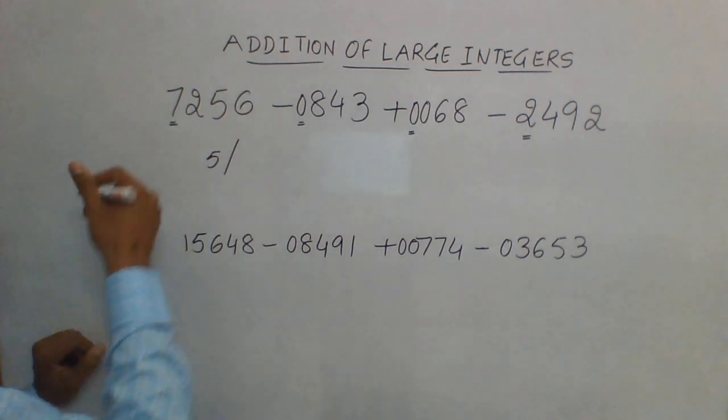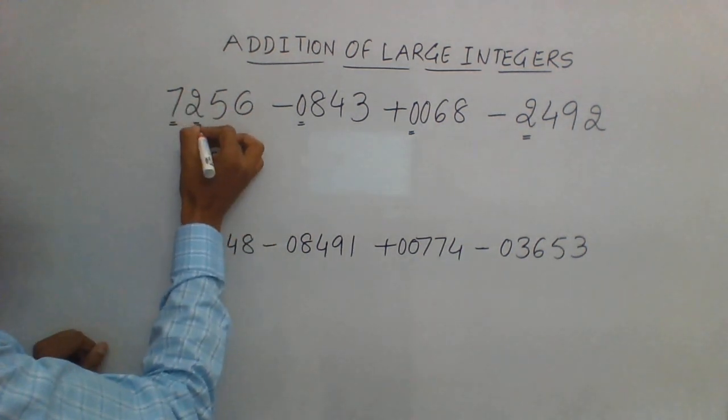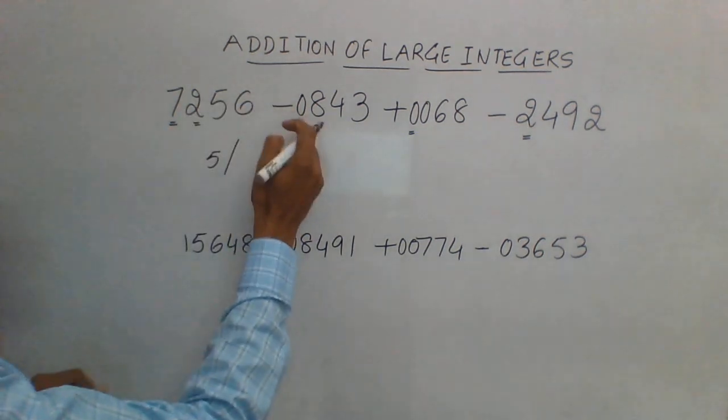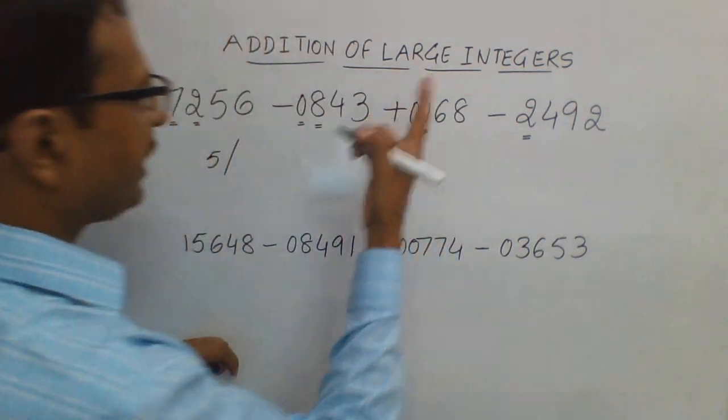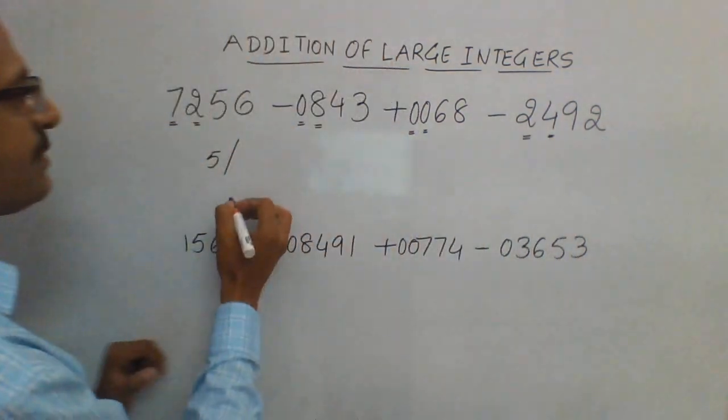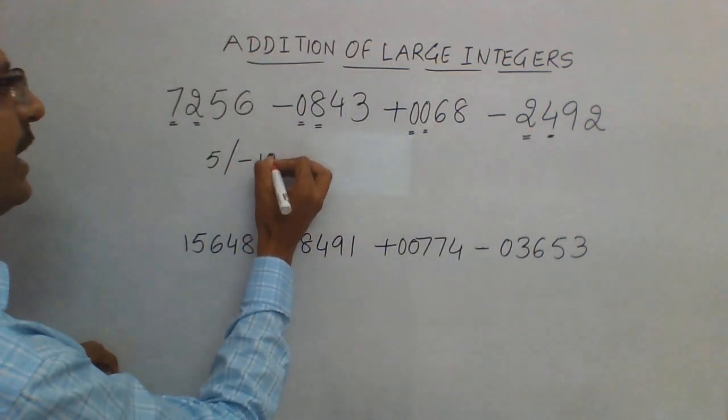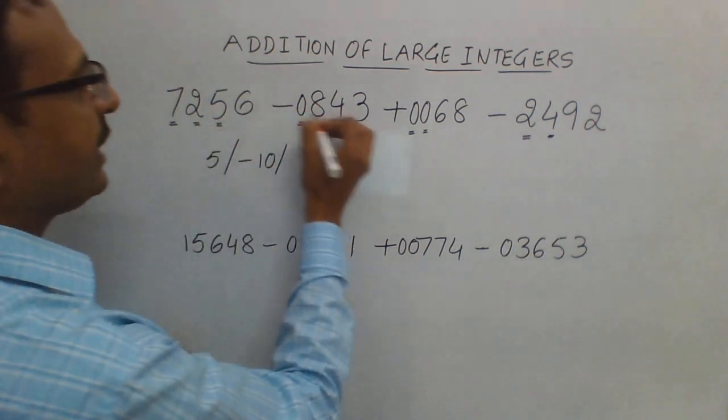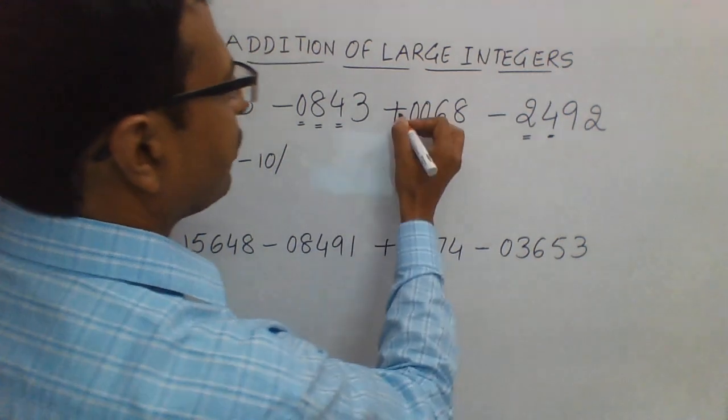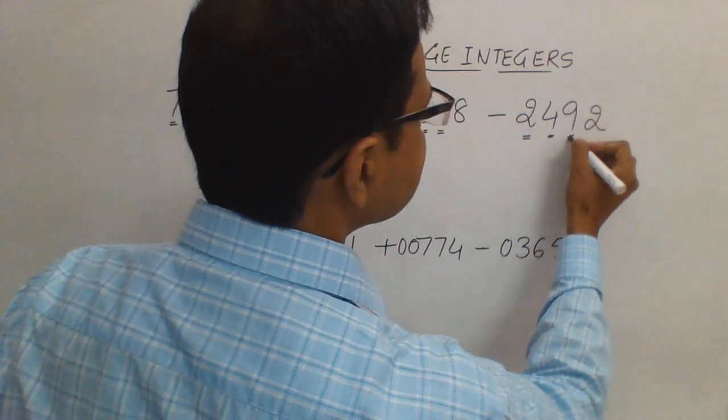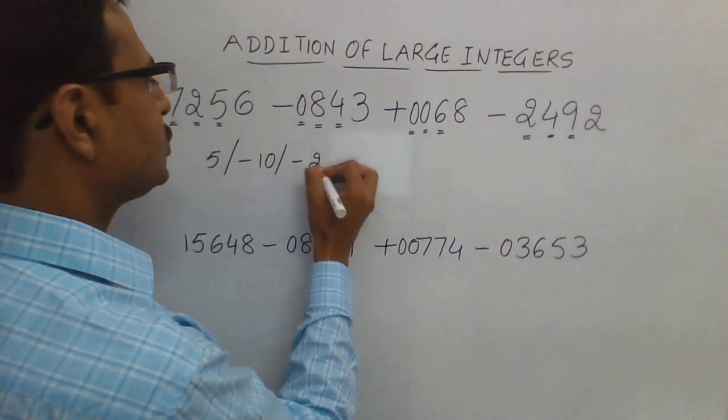Then move on to the next number. 2 minus 8—what is 2 minus 8? It is minus 6. Plus 0 doesn't make any difference, minus 6 minus 4, so minus 6 minus 4 is minus 10. Third digit: 5 minus 4 is 1, 1 plus 6 is 7, 7 minus 9 is minus 2, so another negative number.